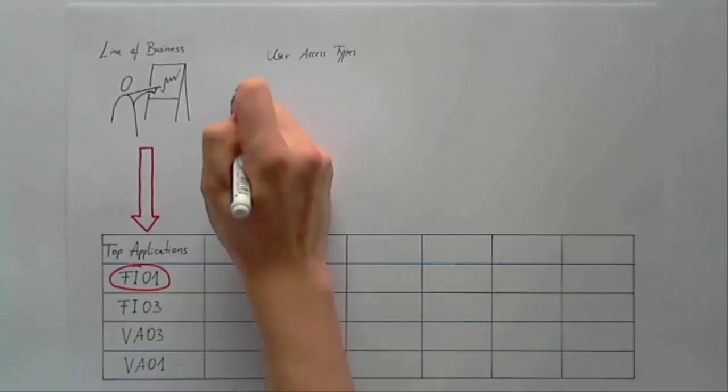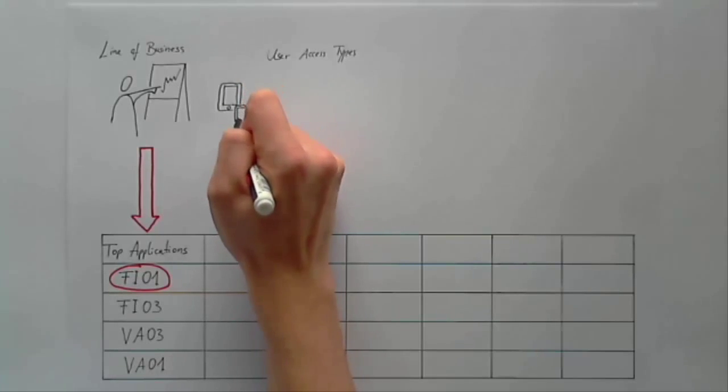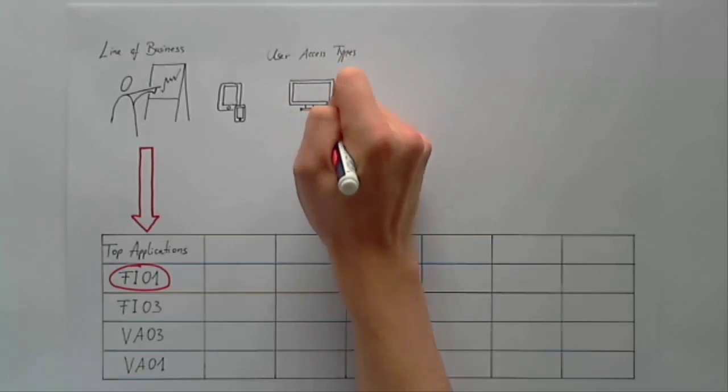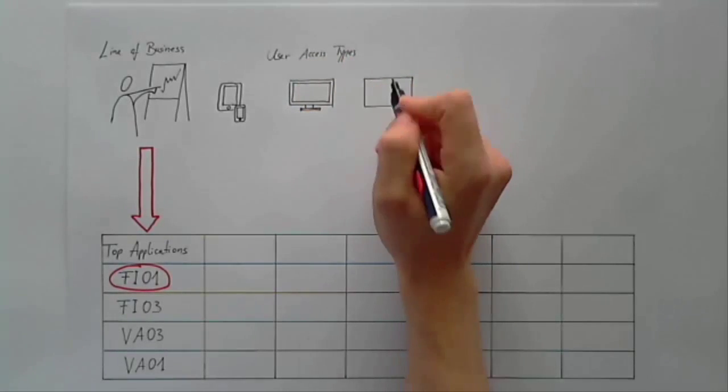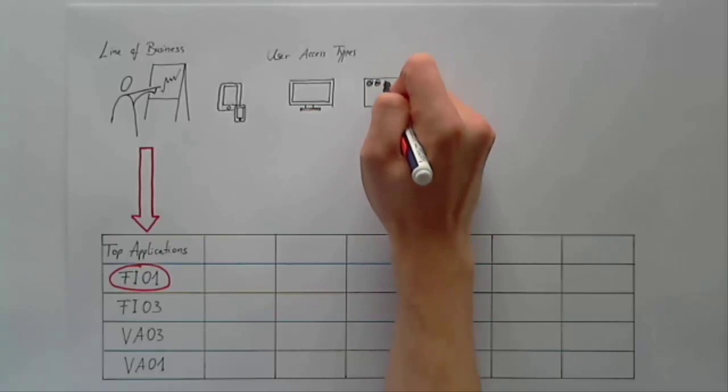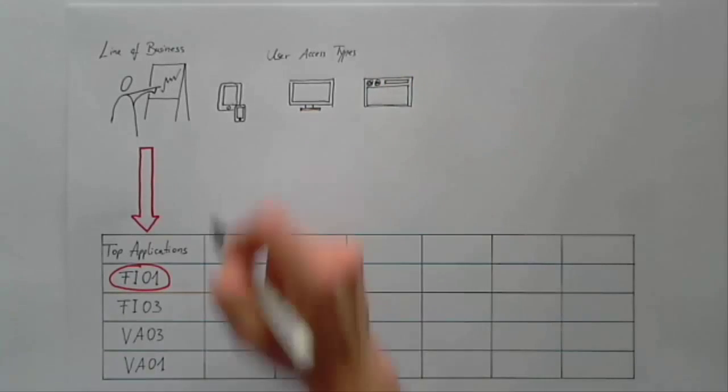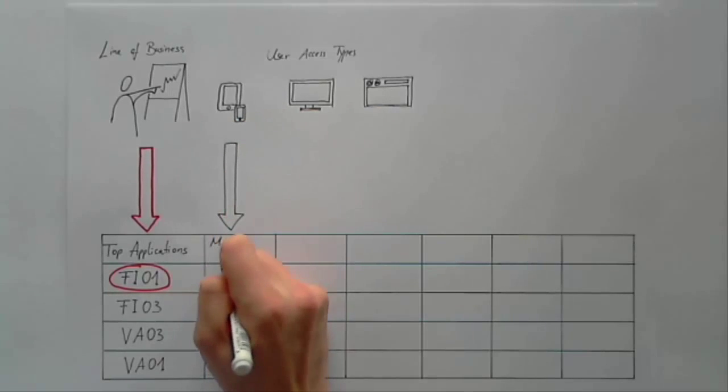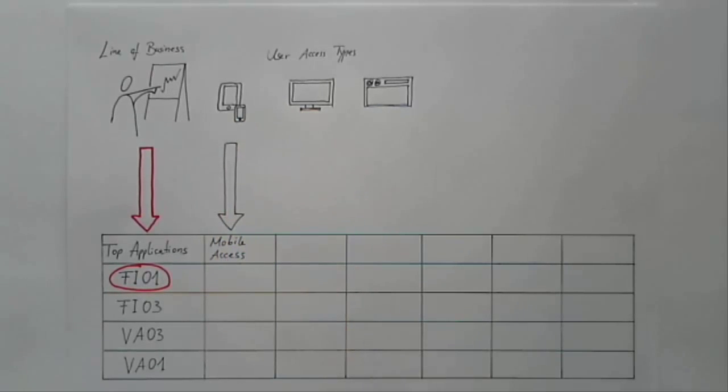User Access Type: It might be important for you to understand the channel through which your users access their applications. With regard to your list, you could add a column that reflects whether the users mainly access the individual applications through a mobile device, a desktop device, or via browser-based web access.